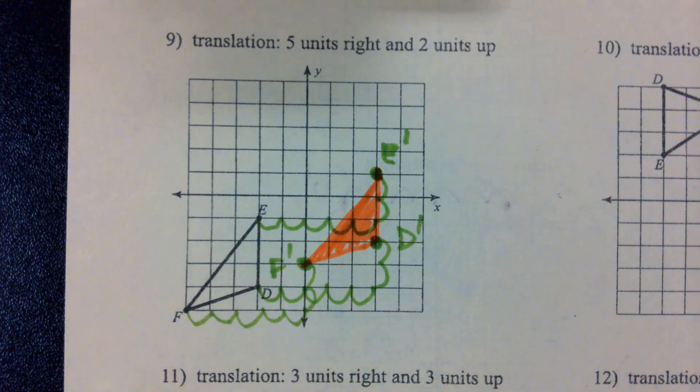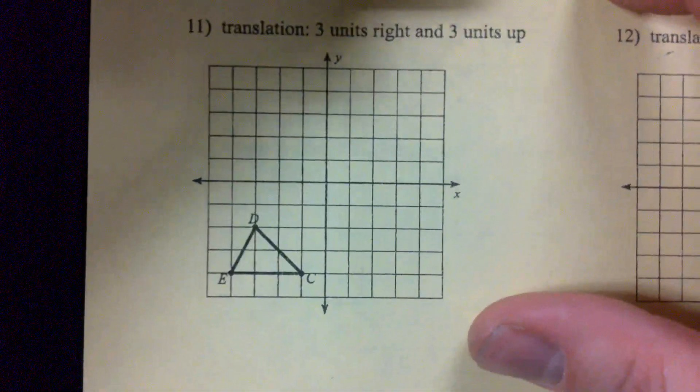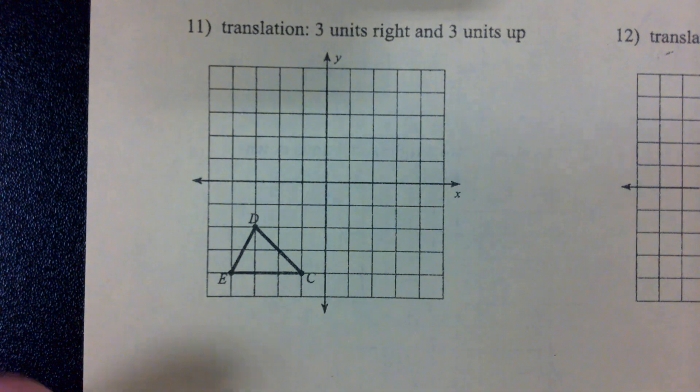Was there any problems on the back of 44 that anyone had trouble with? Anyone had questions about? Okay. Let's do one more together. Let's jump down to number 11. 3 units to the right. 3 units up.